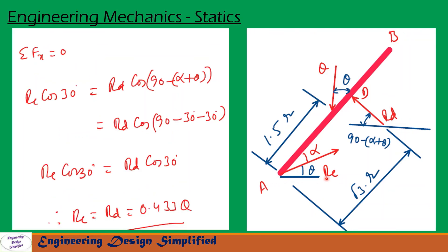Now let us resolve forces along the horizontal: ΣFx = 0. Since Q is vertical it has no horizontal component. RC contributes RC·cos(theta) = RC·cos30°. Setting this equal to the horizontal component of RD, which is RD·cos(90° − (alpha + theta)), and substituting values, we get RC·cos(theta) = RD·cos(theta), so RC = RD = 0.433Q.